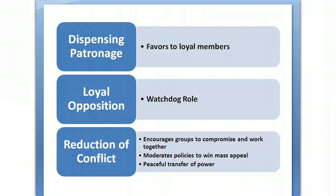The last function of a political party is reduction of conflict. They encourage groups to compromise and work together so they can pass laws. This is the pluralist model — the idea that although there are multiple interests, those interests can compromise, come together to get a policy passed, and create a peaceful transition of power.